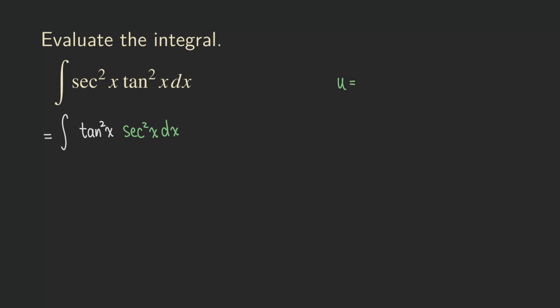Let u be tangent x. Then what is du? du is equal to the derivative of tangent with respect to x. So we get secant square x and then dx.